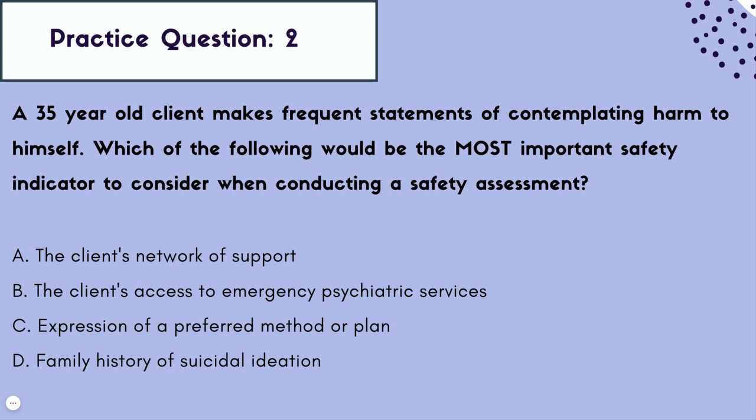Question number two: a 35-year-old client makes frequent statements of contemplating harm to himself. Which of the following would be the most important safety indicator to consider when conducting a safety assessment? A) the client's network of support, B) the client's access to emergency psychiatric services, C) expression of a preferred method or plan, or D) family history of suicidal ideation. This is a risk assessment and crisis assessment question.